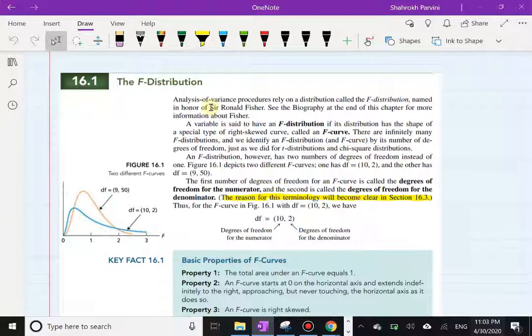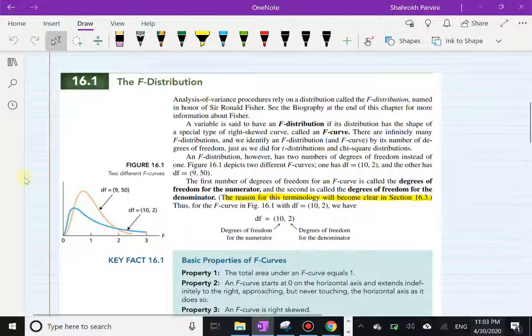Now an F distribution is a continuous distribution just like a normal or a T. That means this curve is a continuous curve. There are no breaks, holes, jumps, or gaps in the curve. It does look skewed.